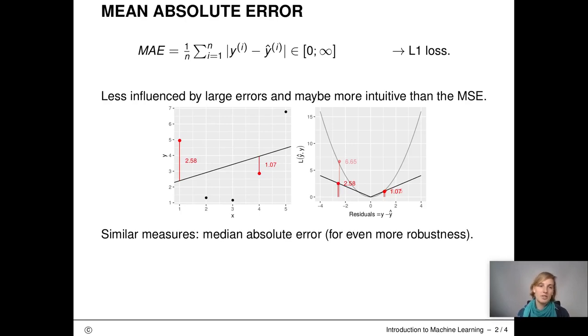The next measure is the mean absolute error. It is also quite similar to the mean squared error. Instead of taking the squared error, here we take the absolute error. Using the absolute error means that large errors have a less heavy contribution to the evaluation measure. The MAE is also something we have seen before. It is equivalent to the L1 loss. Just in performance evaluation, we usually call it mean absolute error instead of L1 loss.